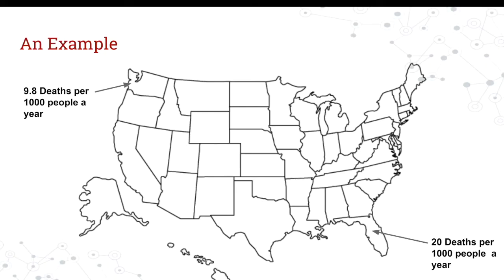Let's talk about death rates. Let's say we looked at two different states: Washington has a death rate of 9.8 deaths per 1,000 people a year — completely made up — and Florida has a death rate of 20 deaths per 1,000 people per year. Suddenly we'd go to the CDC and say we need to invest lots of money into making sure people don't die in Florida. But we might not be considering that the average age in Florida is much higher than in Washington. People with higher ages are more likely to experience death — that's just how life is — and that's a factor you need to consider, something like age.